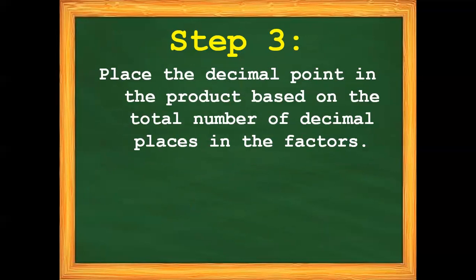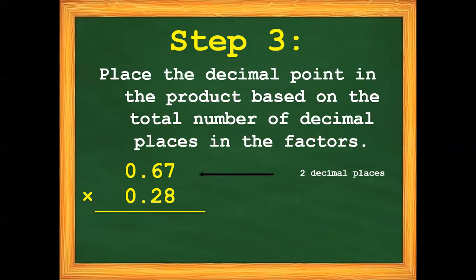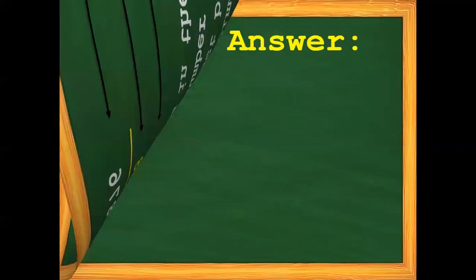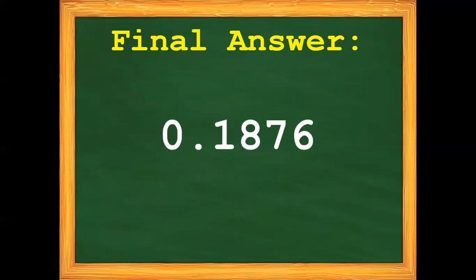Step number 3: Place the decimal point in the product based on the total number of decimal places in the factors. Our first factor has 2 decimal places and the second factor has 2 decimal places, so 2 plus 2 gives us 4 decimal places. The final answer is 1,876 ten-thousandths.